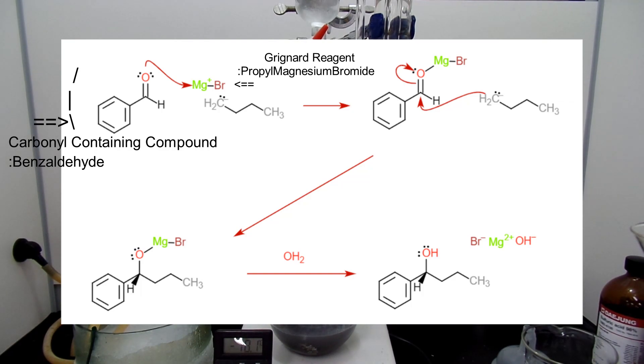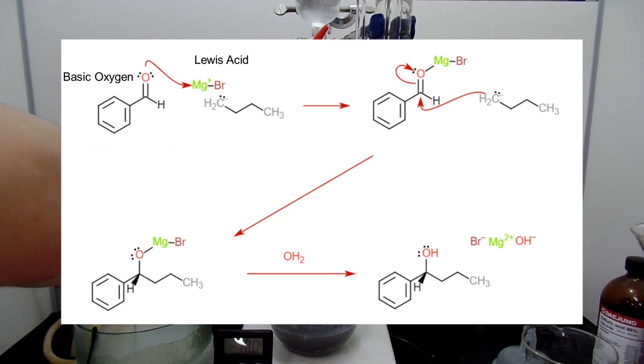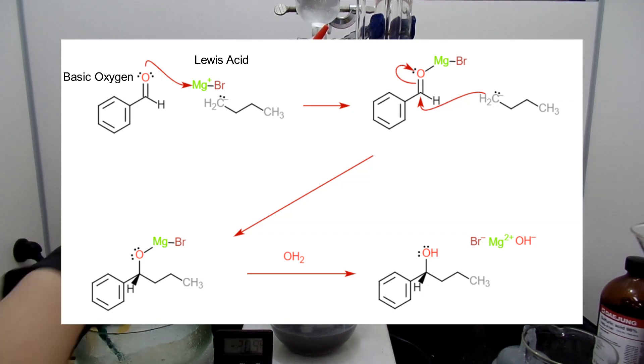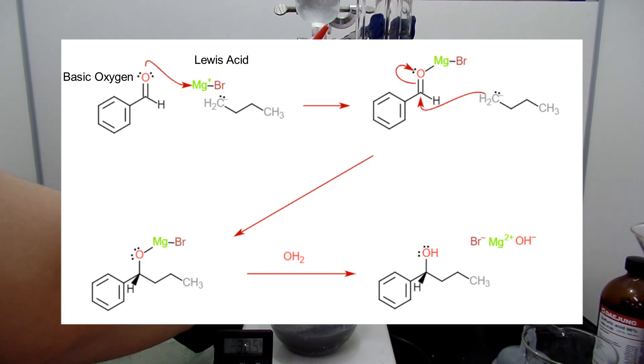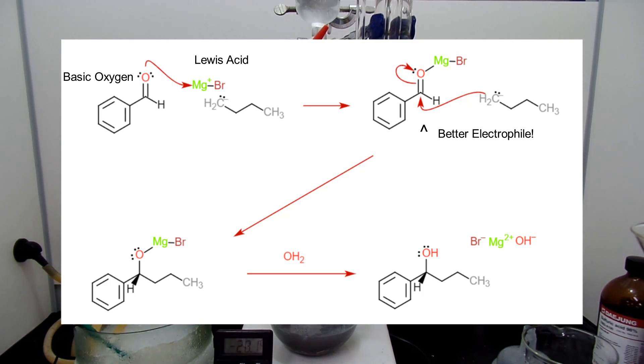What we are doing here is we react carbonyl containing compound with Grignard reagents to create new carbon-carbon bond. The reaction is shown above. Magnesium acts as a Lewis acid and reacts with basic oxygen in the carbonyl group and creates a coordinate bond between oxygen and magnesium ion. This makes the carbonyl to be a better electrophile. This carbonyl is then attacked by the alkyl group. This intermediate product is formed and later hydrolyzed to create our 1-phenyl-1-butanol.